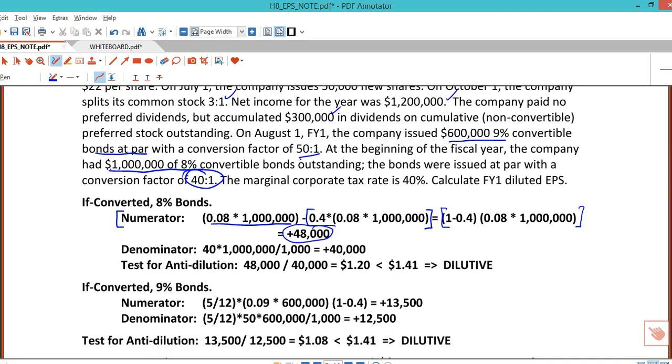All right, that's the numerator. The denominator is the conversion ratio of 40. One million over a thousand is the number of bonds, so that's 40,000. And 48 over 40 is a buck 20, which is less than about dollar 41, so we'll call it anti-dilutive.